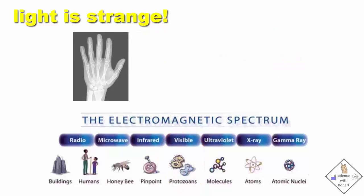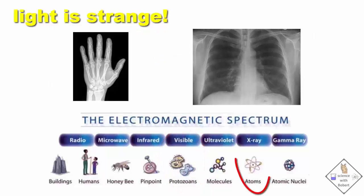For example, light that is the size of atoms, called X-rays, are so powerful they can pass through skin and muscle, but not bone, allowing doctors and dentists to use X-rays to take pictures of our bones and teeth to help them make diagnoses.